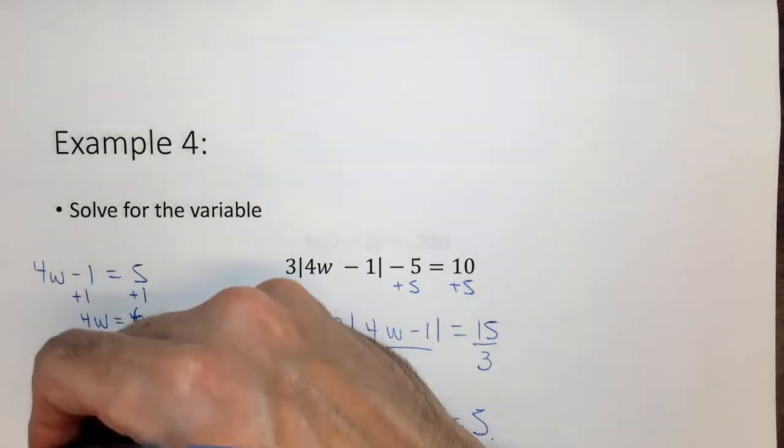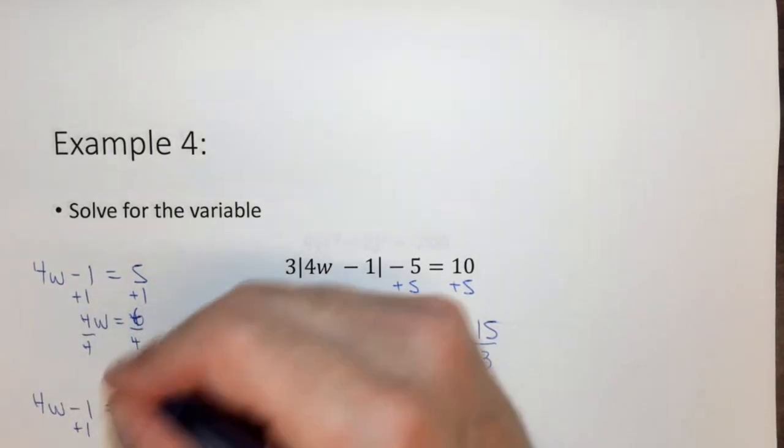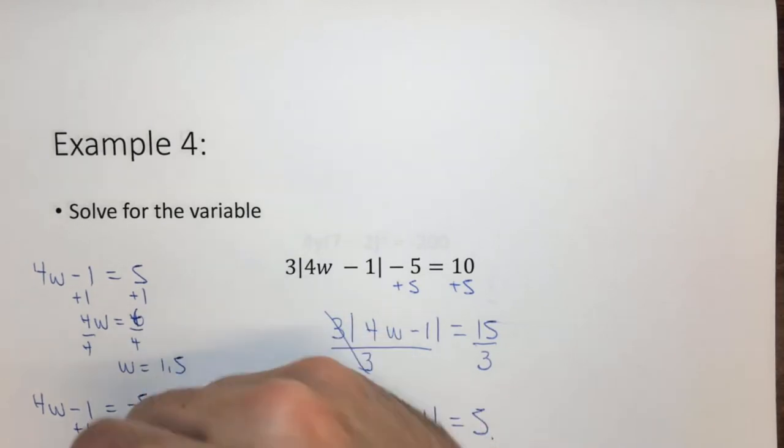In this case we add 1, add 1. 4w equals negative 4, divide by 4, divide by 4. W equals negative 1.